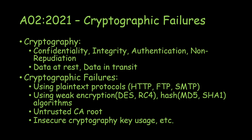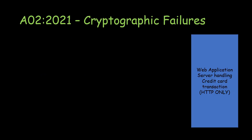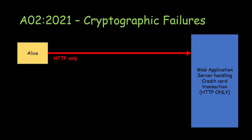Let's look at some examples. Consider a web application server handling credit card transactions that only supports HTTP — no SSL. Imagine the organization has budget issues and cannot afford SSL certificates. A user, Alice, wants to make a transaction. She establishes an HTTP-only connection to the server. Because it's HTTP only, anyone with access to the network can capture that data using a network capture tool and read it in plain text.